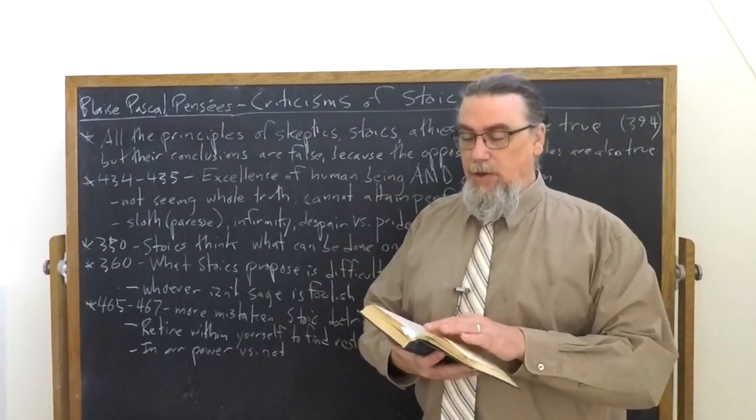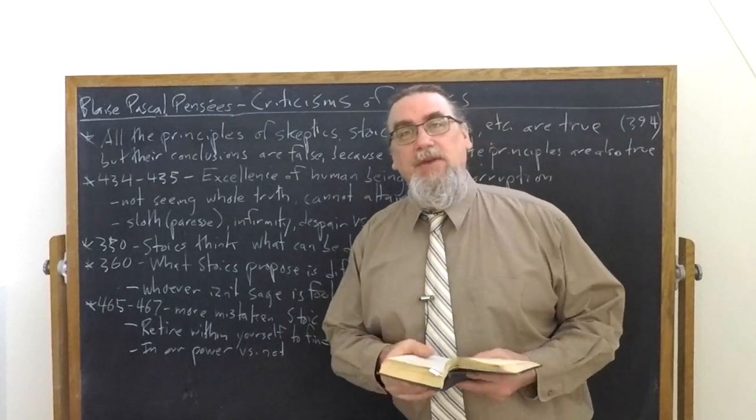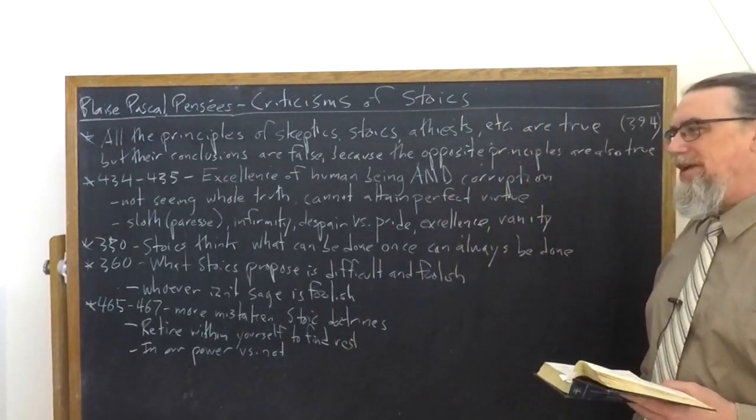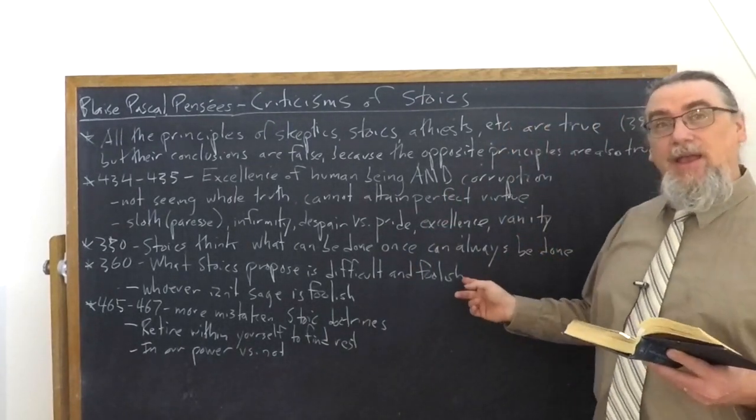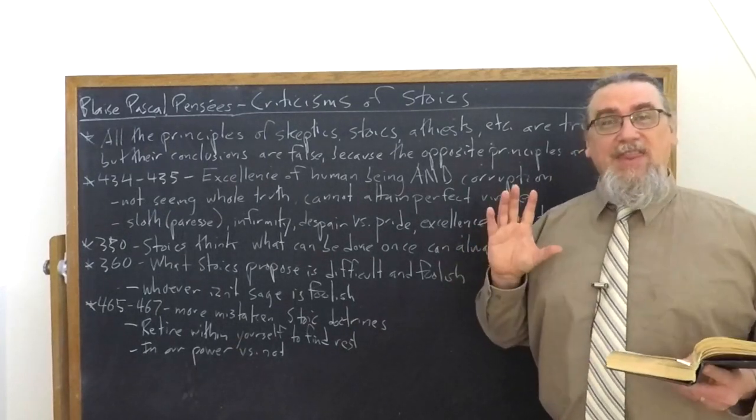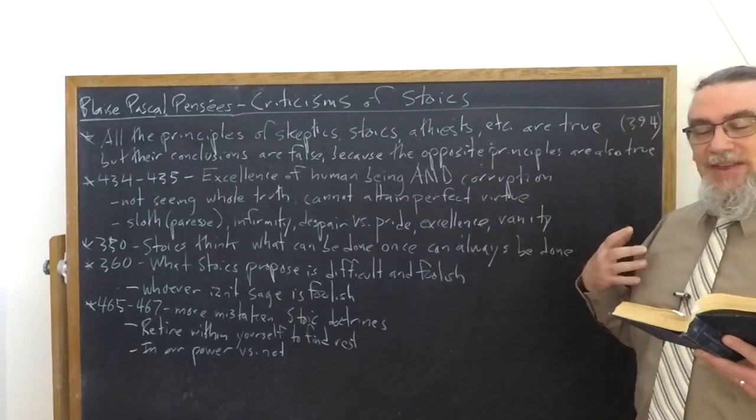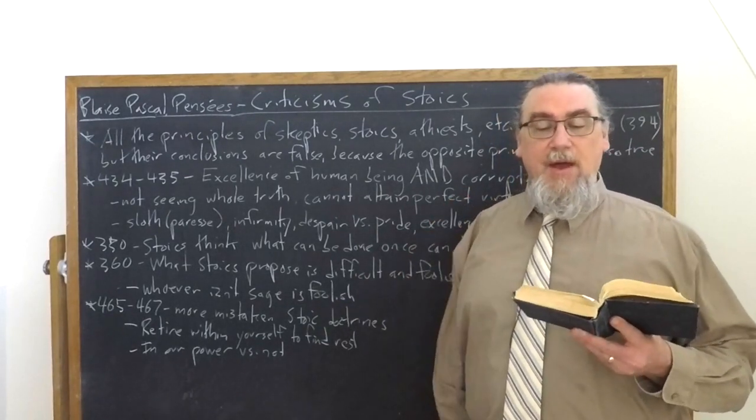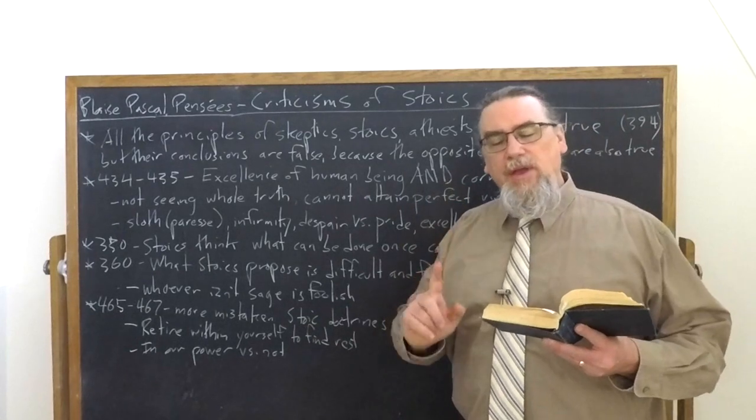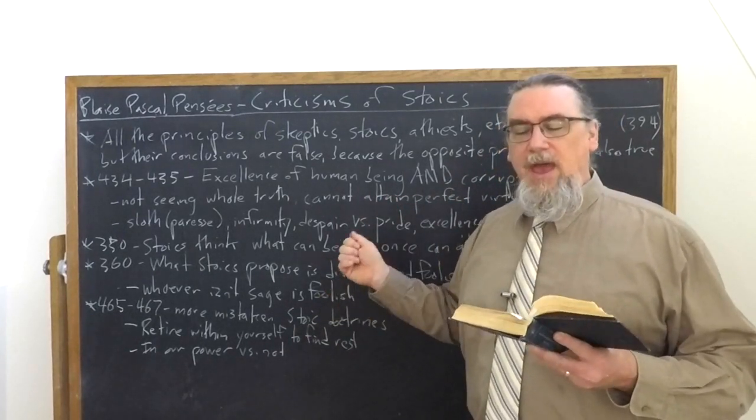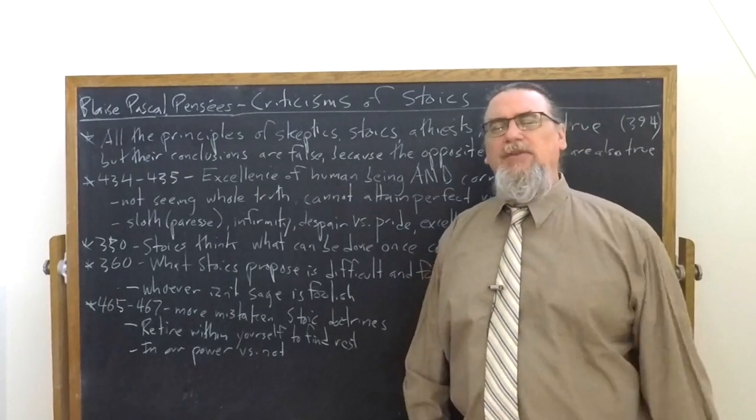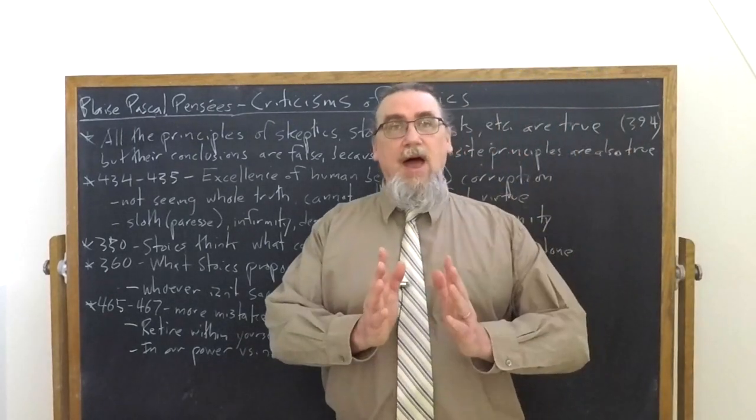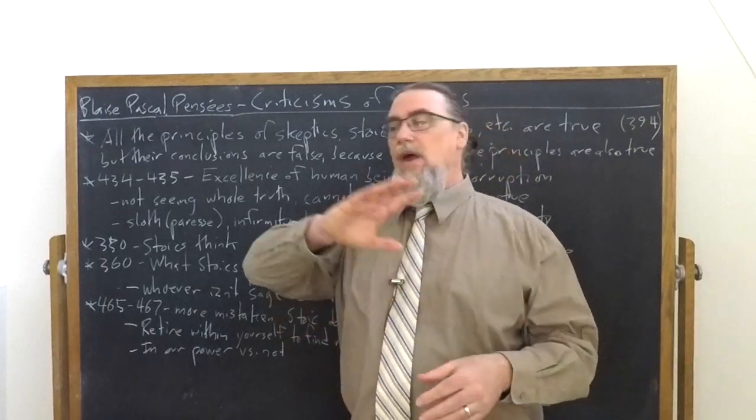In 360, he'll follow this up by saying what the Stoics propose is so difficult and interestingly, choice of words here, foolish, lacking in wisdom. Now, wisdom is for the Stoics the virtue par excellence. And he says he follows this up by saying something that's quite true of the Stoic school. The Stoics lay down that all those who are not at the high degree of wisdom are equally foolish and vicious as those who are two inches underwater. Now, what's the reference there? So the Stoics, when they were talking about virtue and wisdom, they would say, listen, it's like an on off switch. You're either on this side and you're wise or you're on this side and you're foolish.